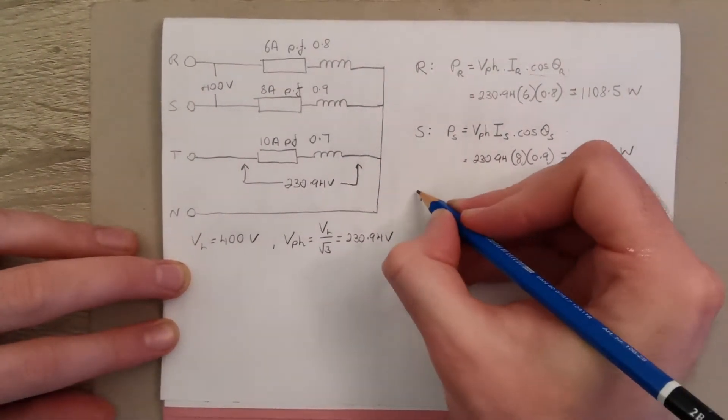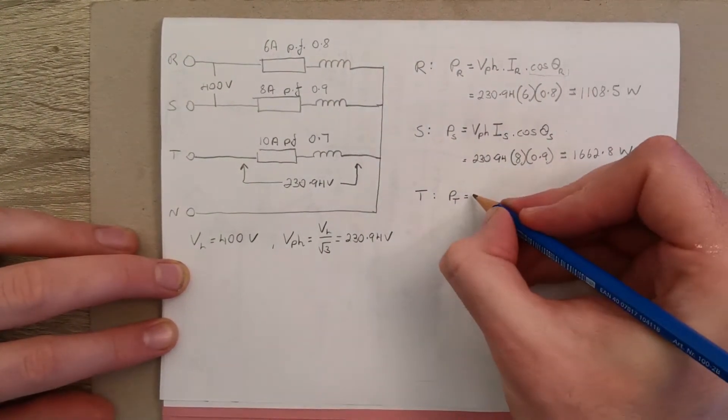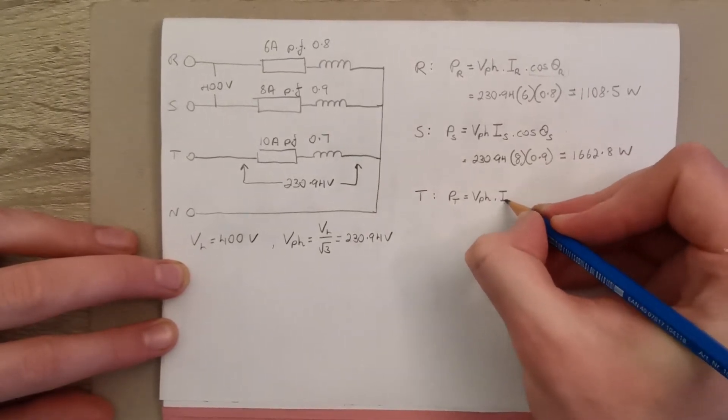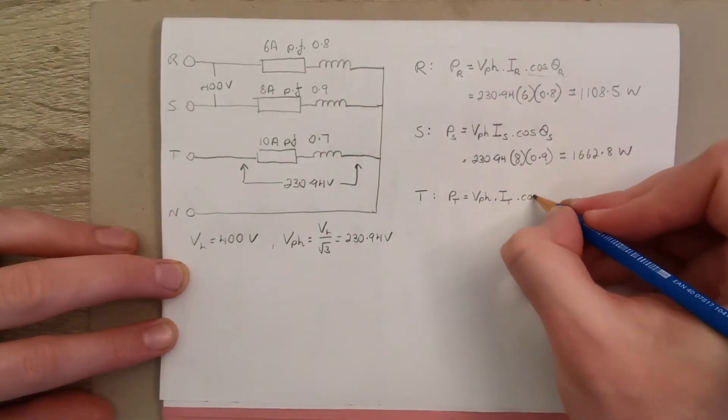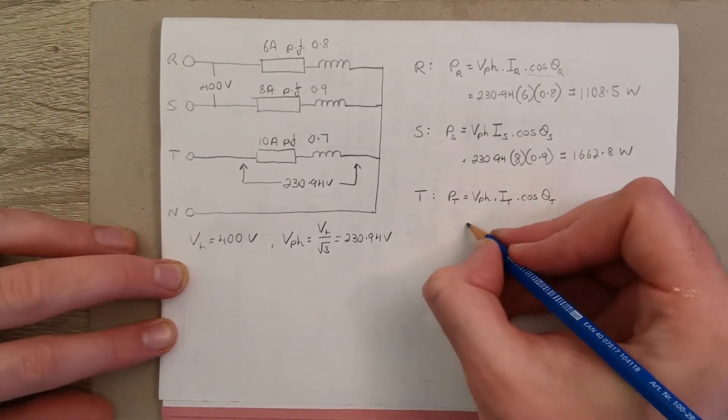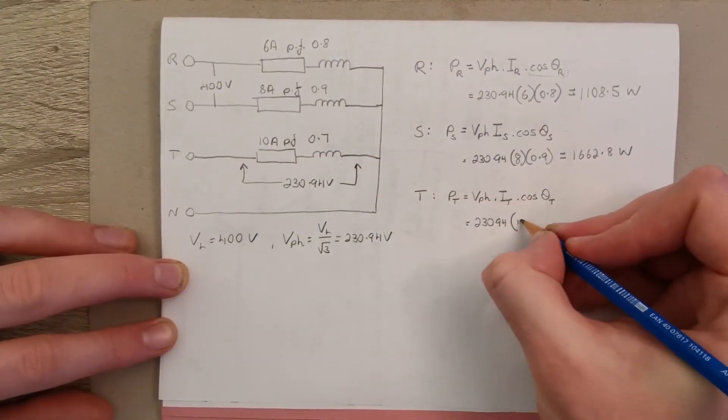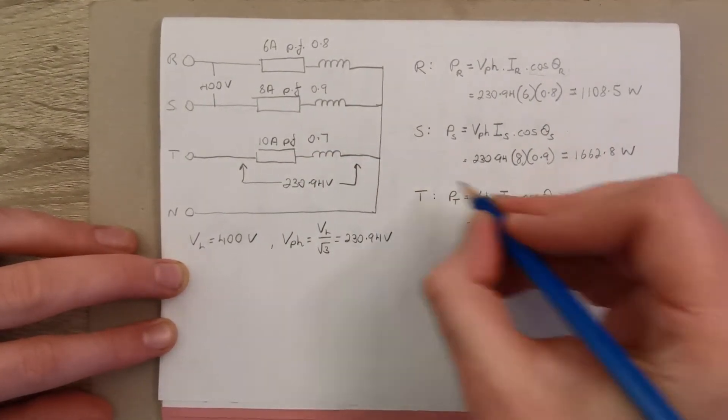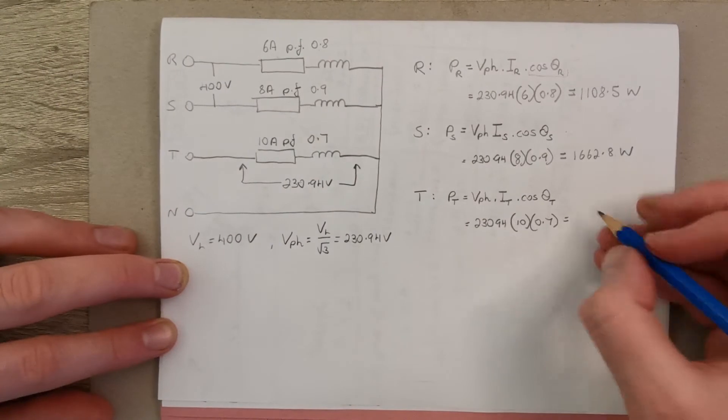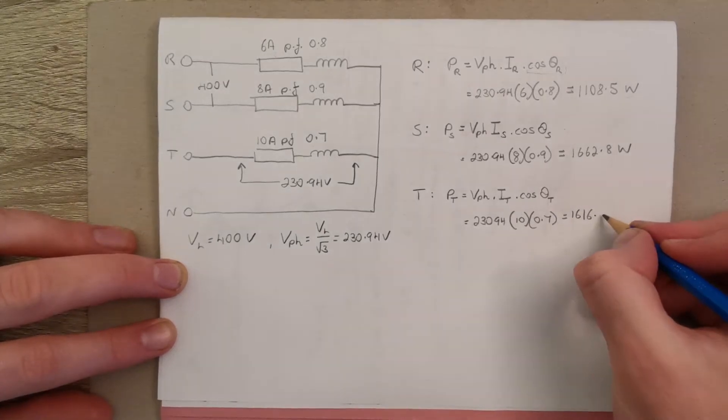Now for the final phase, power in phase T. Again phase voltage times line current times the power factor. So 230.94 for our phase voltage, 10 amps this time for our line current, and our power factor is 0.7. And that works out at 1,616.6 watts.